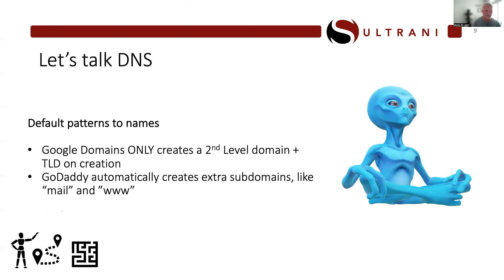There are default patterns to domain names. The maze icon means there's a lot of analysis possible here. If one of you registers a domain with Google today at domains.google.com, when you create that domain it's going to create a second-level domain and a TLD — nothing extra. That's a default pattern that lets us recognize a Google registration. Even without querying the registration database, if that's all that's present, we know it's in its default state.